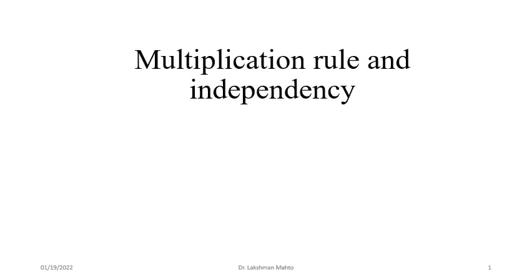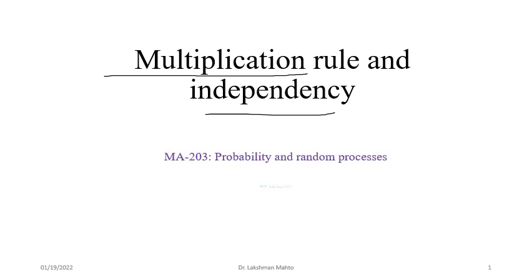This is lecture number nine. Here we will discuss in detail about the multiplication rule, independency of two events, and afterward, if time permits, we will discuss total probability. Total probability is very essential in order to understand Bayes' theorem, and it is related with the concept of partition.